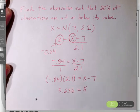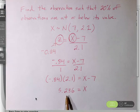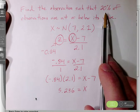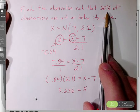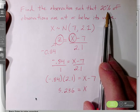And we are done. So an observation of 5.236, this is the observation at the 20th percentile. This is the observation such that 20% of observations are at or below this value.